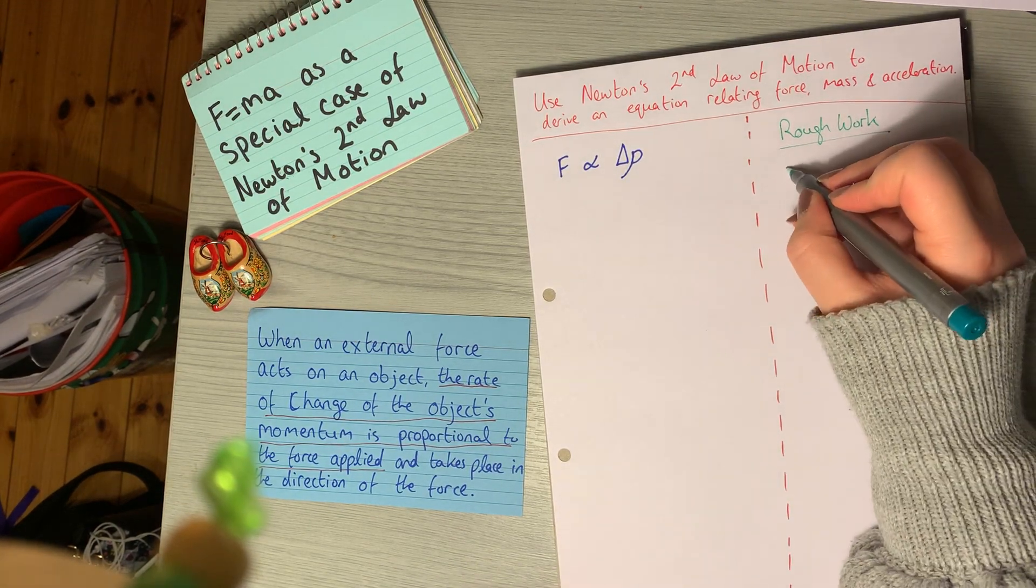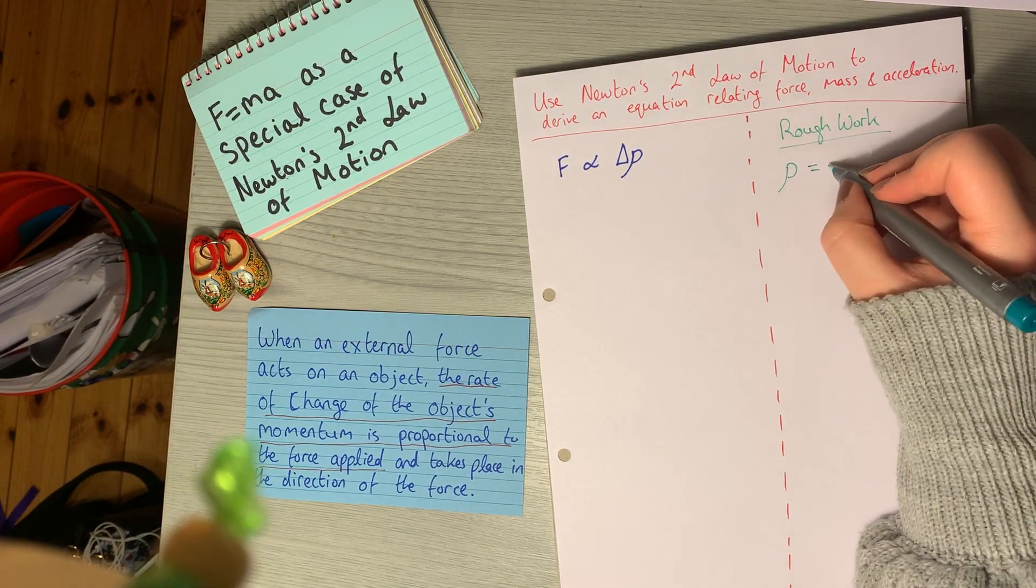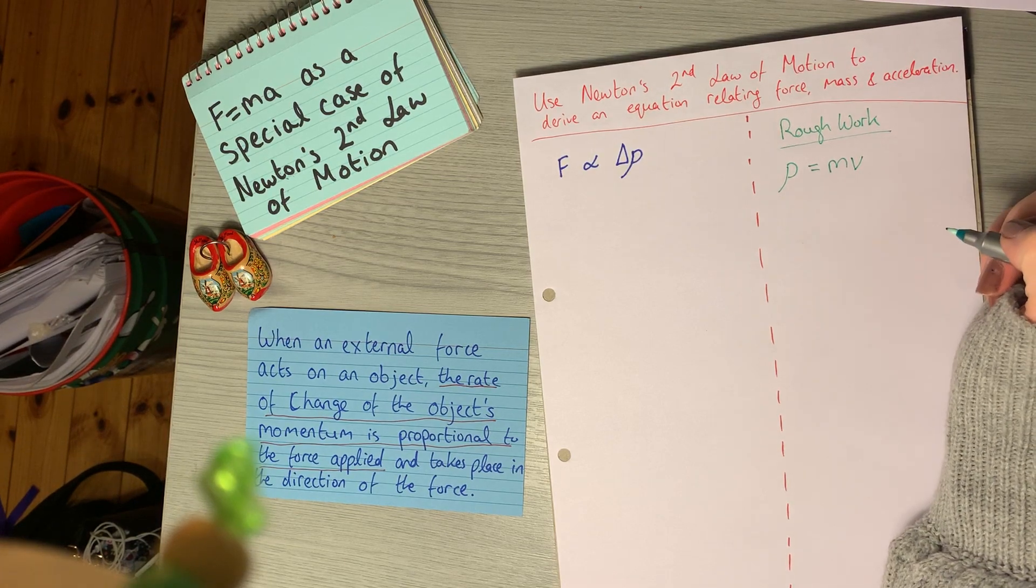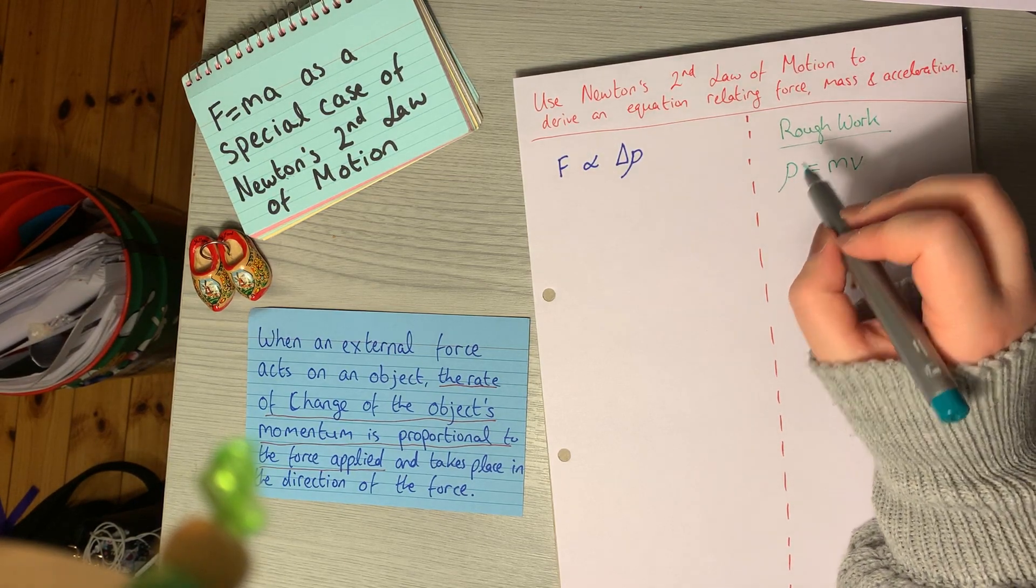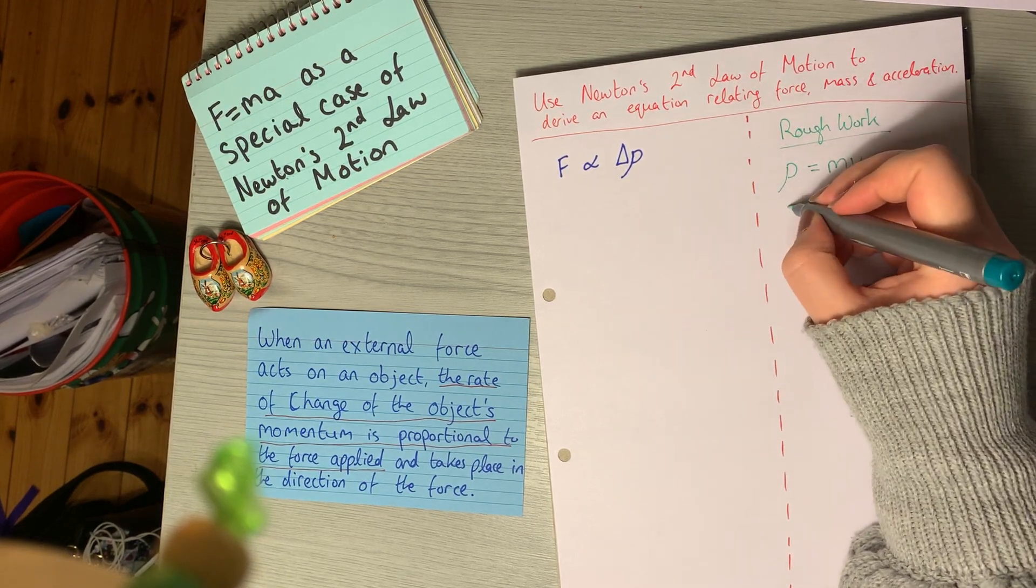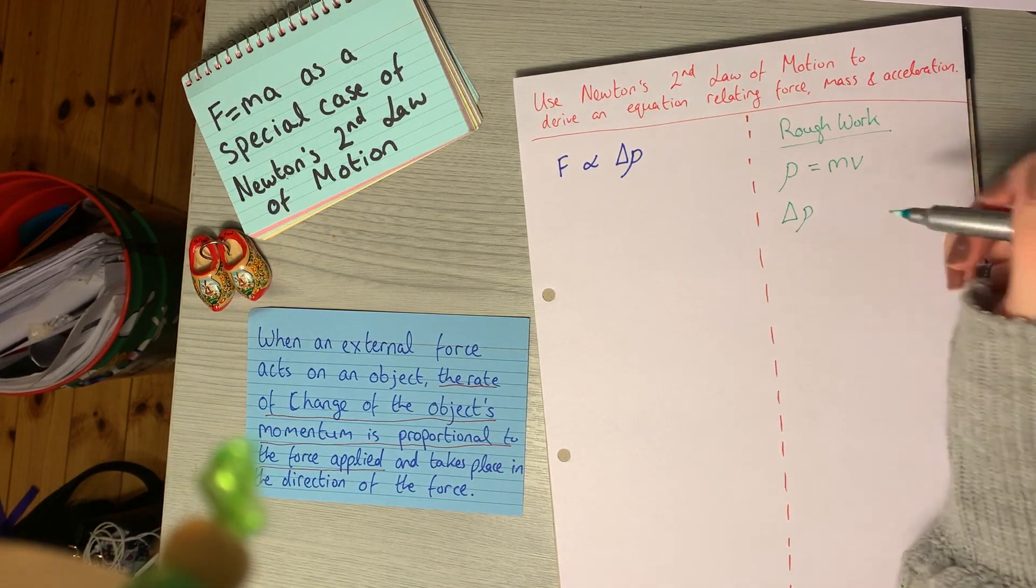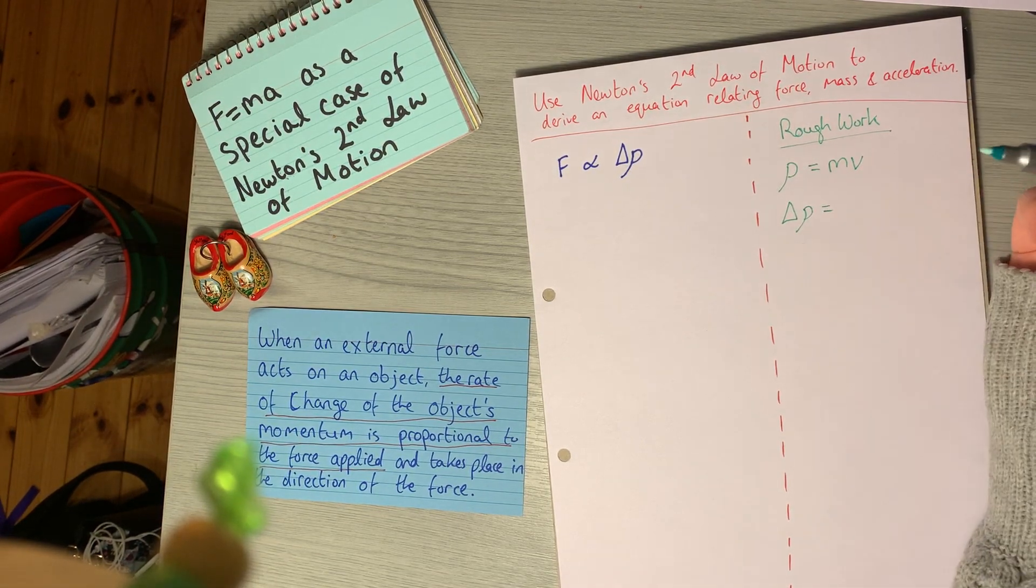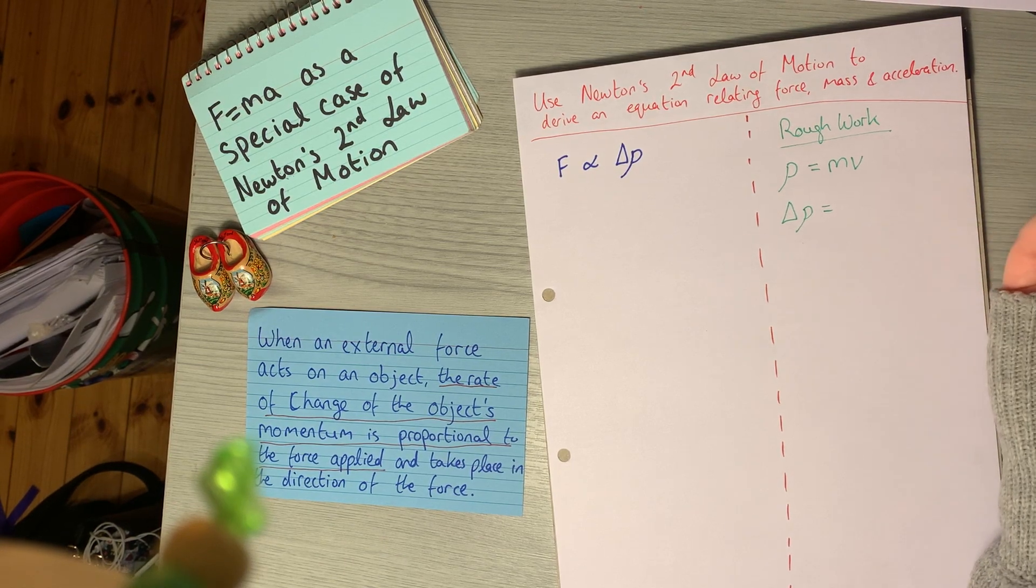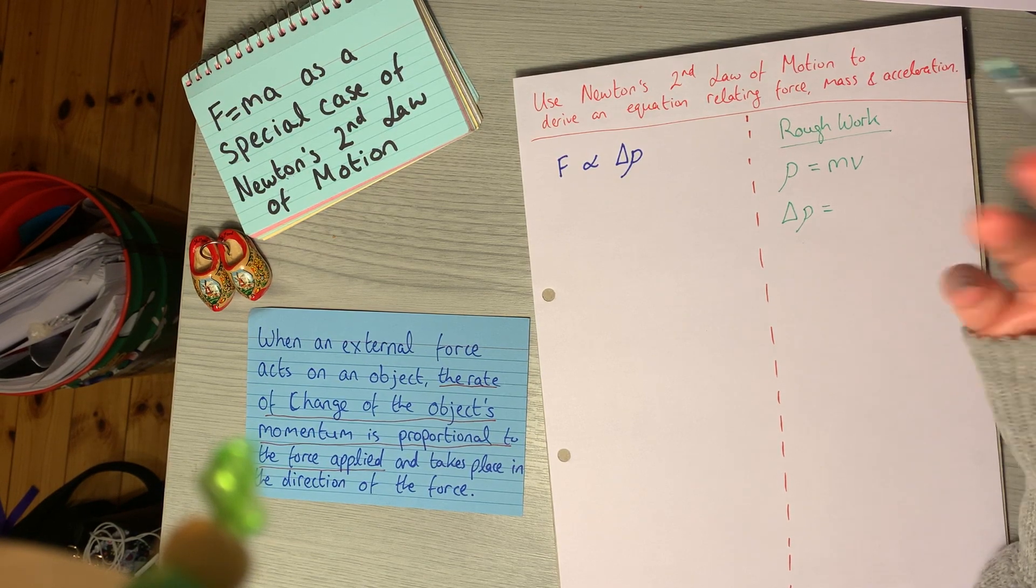We're going to have a look at momentum first. The definition of the momentum of an object is the object's mass times its velocity, V. But we're not looking at just momentum, we're looking at the rate of change of momentum. So we're looking for delta P or delta rho. We're basically asking what is the rate of change of momentum dependent on? What changes to make momentum change?